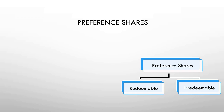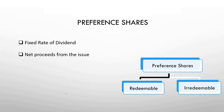There are key points to remember. First, preference shares carry a fixed rate of dividend and there will be a coupon rate with every preference share. Whenever you calculate the dividend, it should always be calculated on the face value. Second, net proceeds from the issue means whenever you are issuing the preference shares, what amount you are getting — whether at par, at premium, or at discount — plus you have to keep in mind the floating cost.